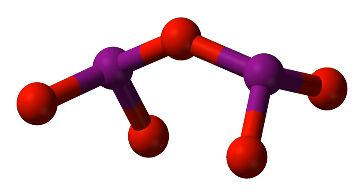Iodine pentoxide is the chemical compound with the formula I2O5. This iodine oxide is the anhydride of iodic acid and the only stable oxide of iodine.